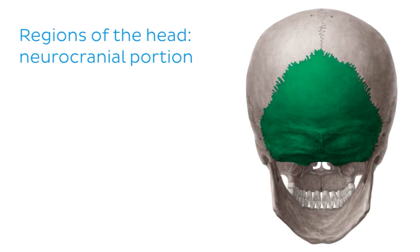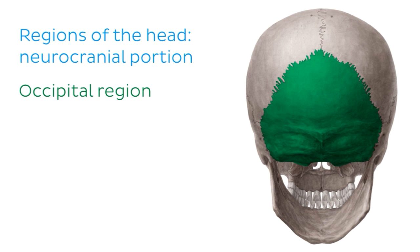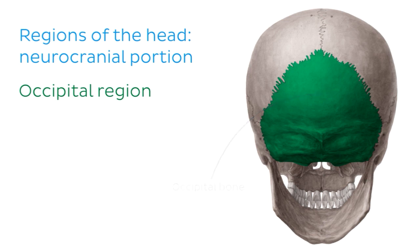The fourth region of the head is the occipital region, located at the back of the head, overlying the occipital bone of the skull. Note that the frontal and occipital regions overlie unpaired bones of the skull, in contrast to the temporal and parietal regions which overlie paired bones of the skull.